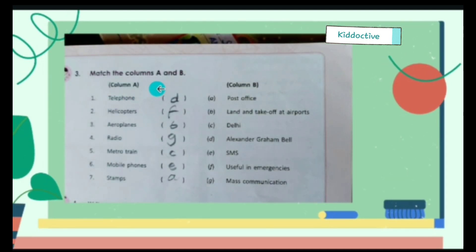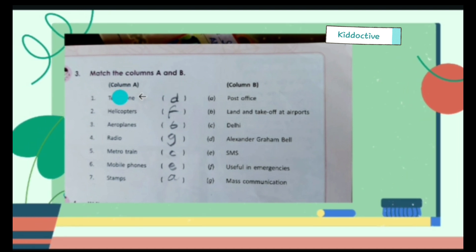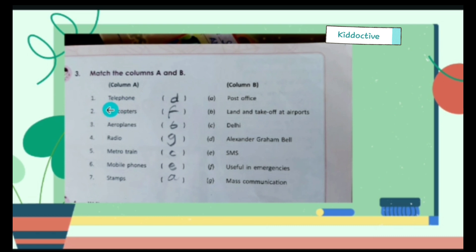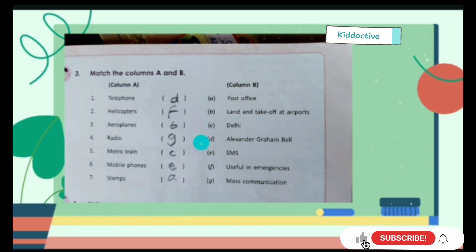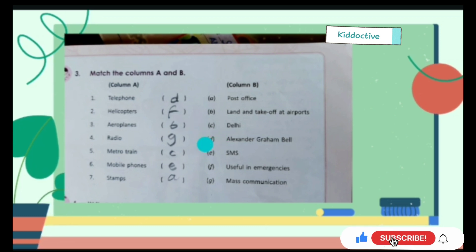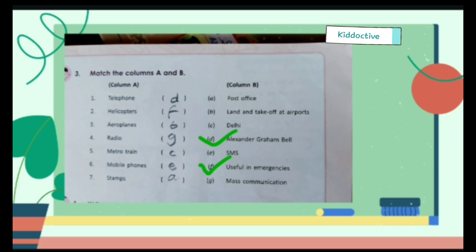Match the following of column A with column B. Telephone is matched with Alexander Graham Bell. Helicopters are useful in emergencies. Aeroplanes land and take off at airports. Radio is a mass communication. Metro train is matched with Delhi. Mobile phones are matched with SMS.